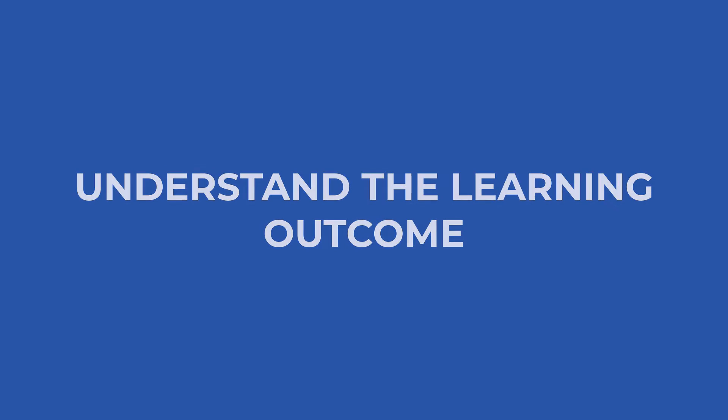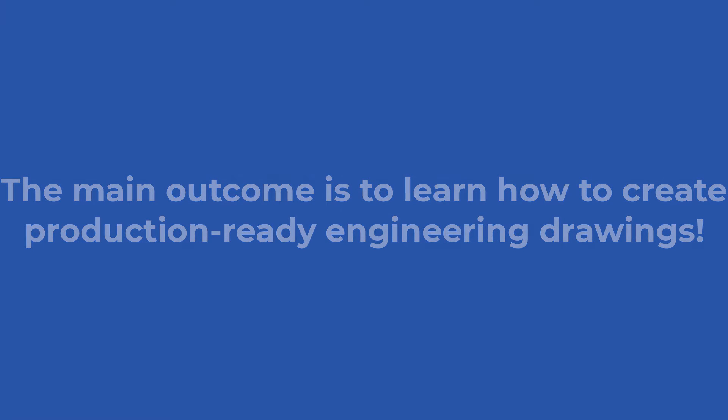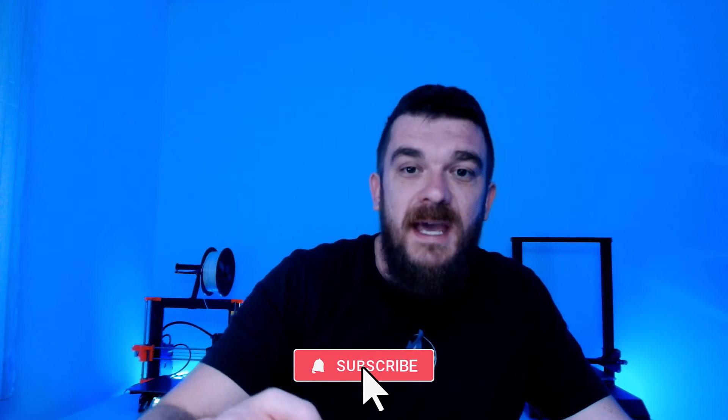Now that we understand the big picture, let us move on to understanding the outcomes of your learning. In this case, we will focus only on CADD and not talk about other mechanical engineering knowledge required to design things. The main outcome is to learn how to create production-ready engineering drawings. We as mechanical design engineers create physical objects and must communicate our design intent properly. It is important to understand learning outcomes so we are focused on the right things and don't waste our precious time.